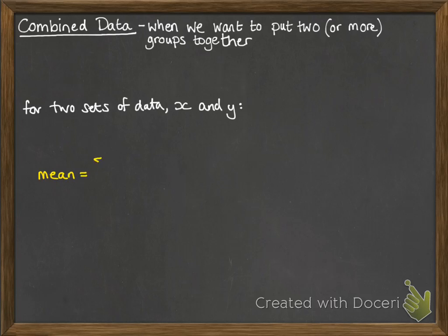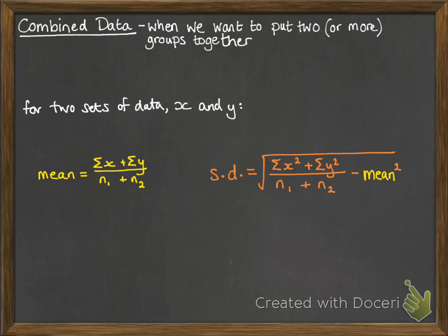So say we've got two sets of data, one's about x and one's about y. Then the mean of them combined, if we wanted to put those two groups together, would be to add up all of the x values, add up all the y values together, and then divide through by however many we had in x plus however many we had in y. And the standard deviation would look like this. Again, it's a similar transformation of our standard deviation formula that we've seen before.